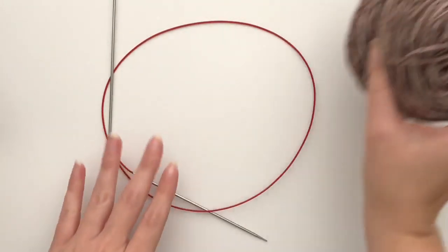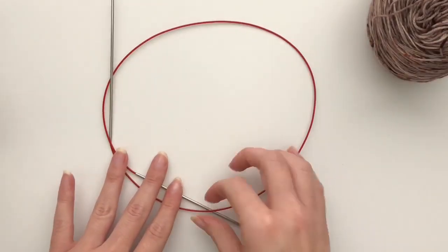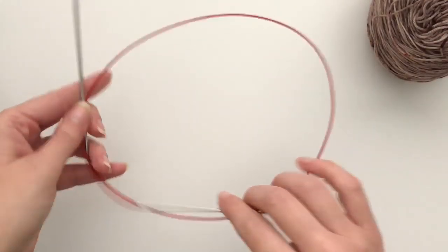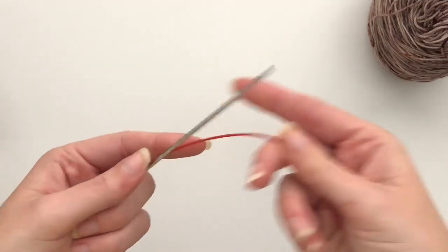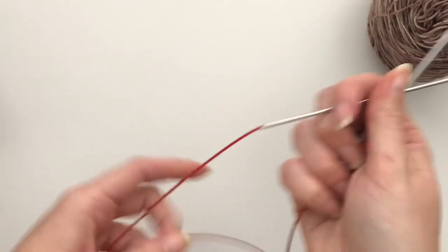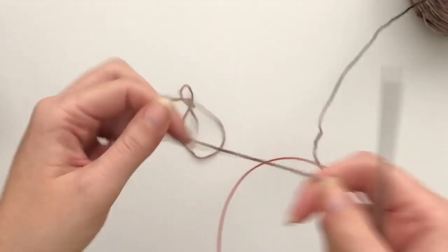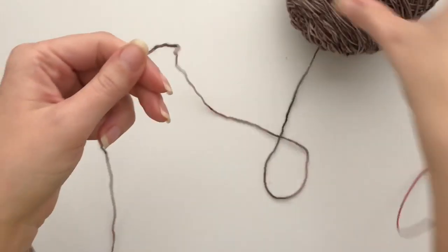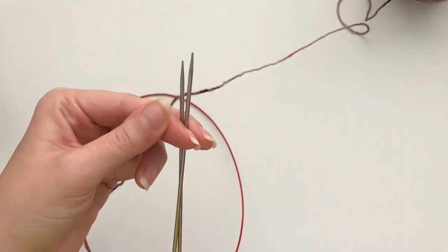I have my skein of yarn. I have my needles here. I use a US 1, 2.25 millimeter needle. You definitely use your needle of preference and size that you prefer or to get the gauge that you need. So I'm going to make sure I have enough yarn pulled out to cast on my sock. And we're going to start with a slipknot.